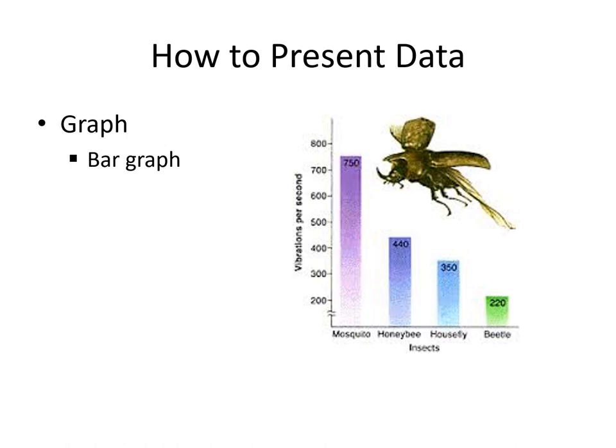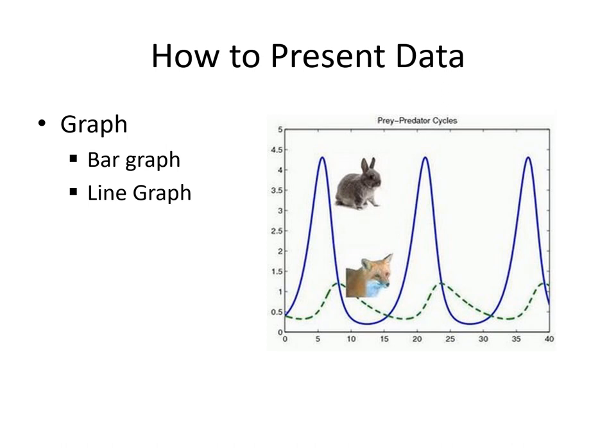Then you also have line graphs. Line graphs show you values as well, but they typically relate to a temporal trend, such as the population of rabbits and foxes as they respond to each other. You will take this up in ecology.